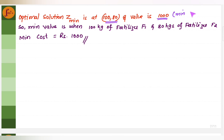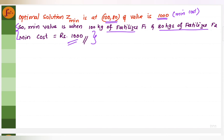The minimum cost is Rs. 1,000, and it occurs when 100 kg of fertilizer F1 and 80 kg of fertilizer F2 are bought. For Class 12 and PUC science students, this conclusion must be written explicitly: the minimum cost is Rs. 1,000 when 100 kg of F1 and 80 kg of F2 are used. As part of revision, I've covered one problem with all the steps — we'll go through more problems in the forthcoming videos. Thanks for watching.